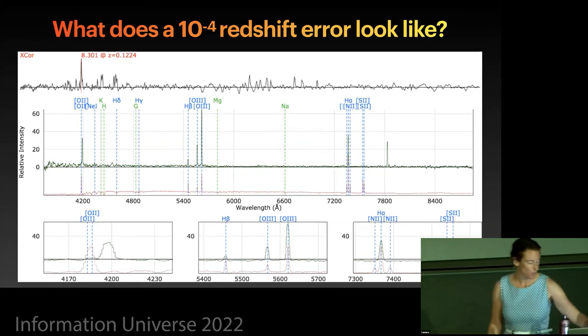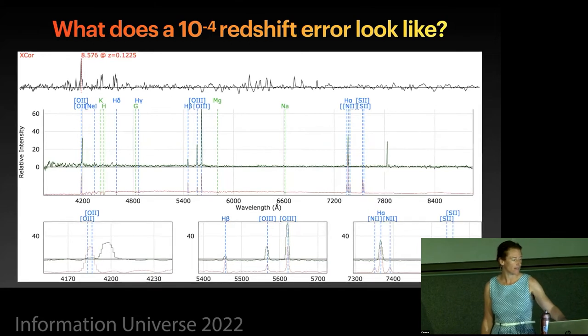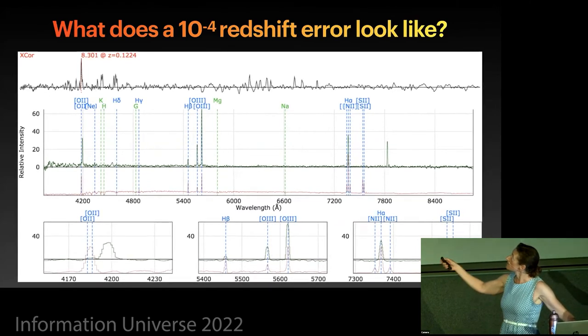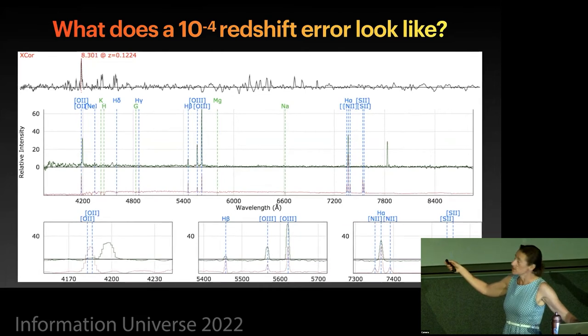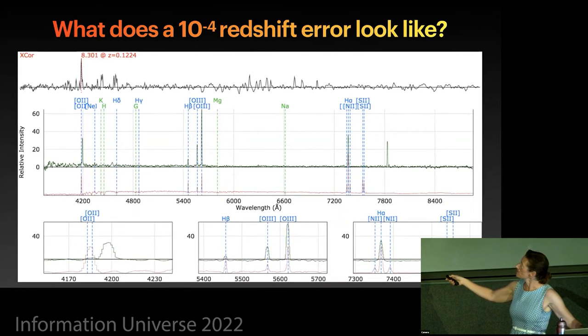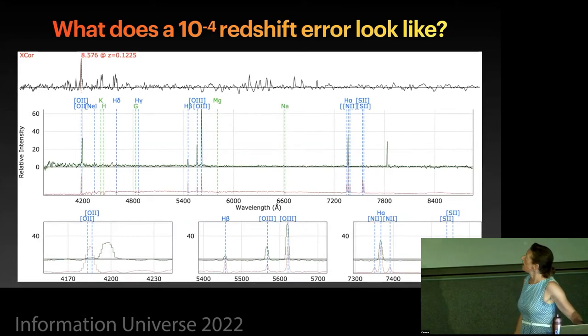So I'm going to, this is a spectrum that we took at the Anglo-Australian Telescope in Australia as part of the OzDES survey. And if you notice now, I'm flicking between two spectra. You can see the numbers at the top are changing. And you may not be able to notice the change in the spectra. So that's a 10 to the minus 4 shift in redshift. You can sort of see it most on this bottom one down here that's shifting back and forth. So 10 to the minus 4 shift is tiny. It's much less than one pixel in our spectrograph.